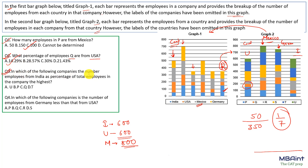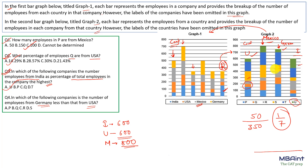Question 3: In which company is the number of employees from India, as a percentage of total employees, the highest? India — the green region — has the highest value comparatively in company U. So the answer is U. Question 4: In which company is the number of employees from Germany less than that from USA? Comparing the two graphs: for the green region both are equal; for blue, Germany is greater; but comparing the yellow region, Germany has fewer employees than USA. So the answer is S.